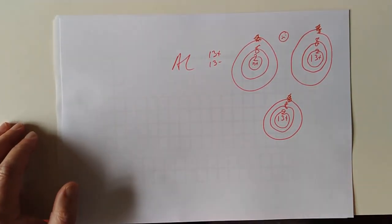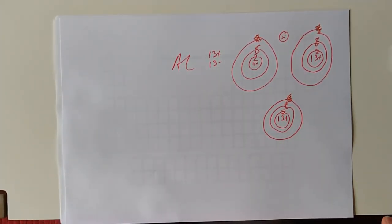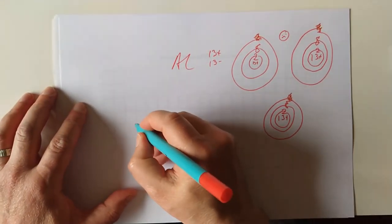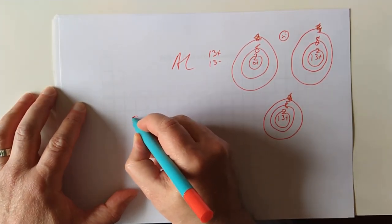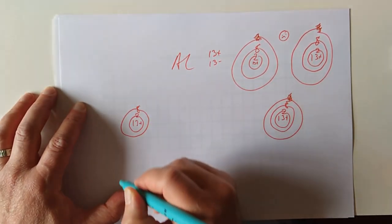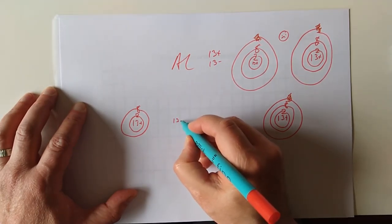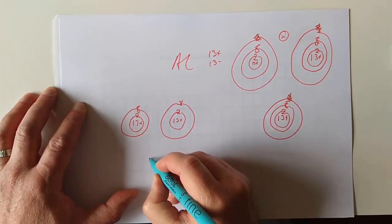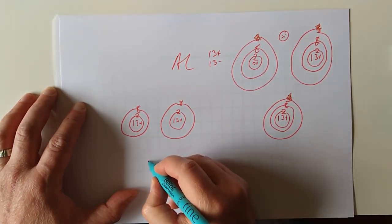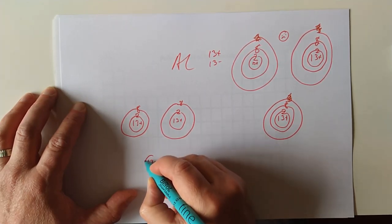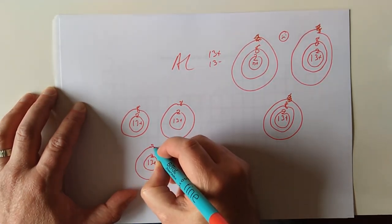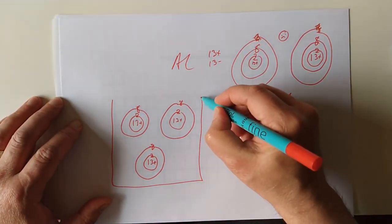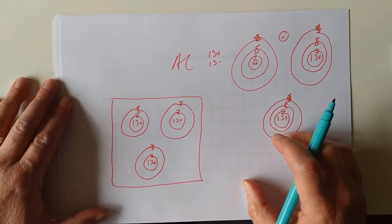They are left to wander aimlessly through the block of metal. If we redraw our aluminium, a more stable version, it's got 13 protons and 2 and 8. Next door the other atom, 13 protons, 2 and 8. This is a very small block of aluminium, only three atoms big.